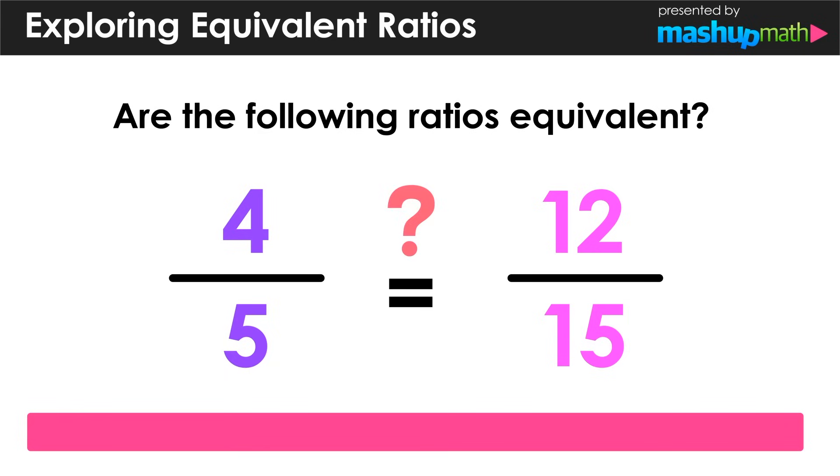That means we can determine that these two ratios are equivalent, and we can justify that statement because, as we just showed, the cross products are equal.